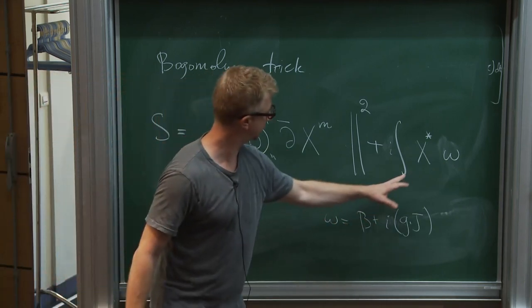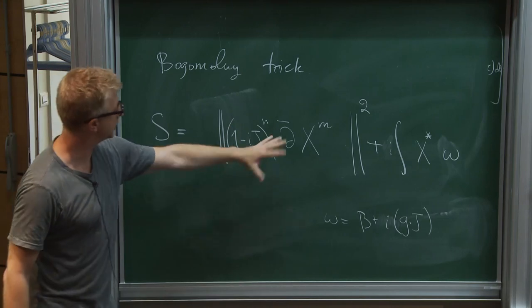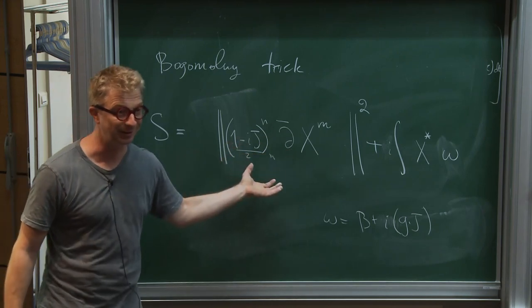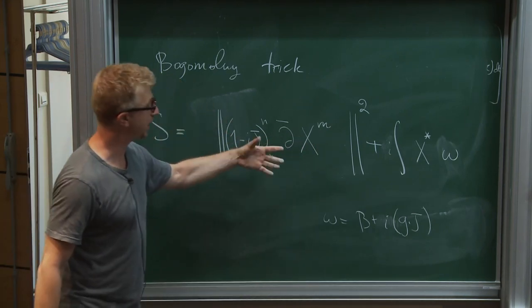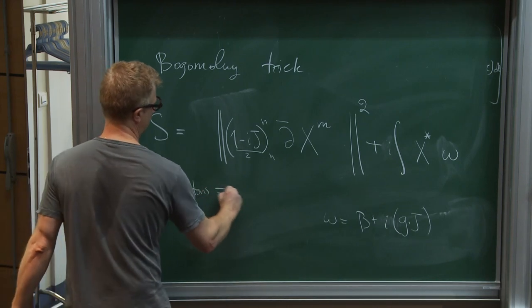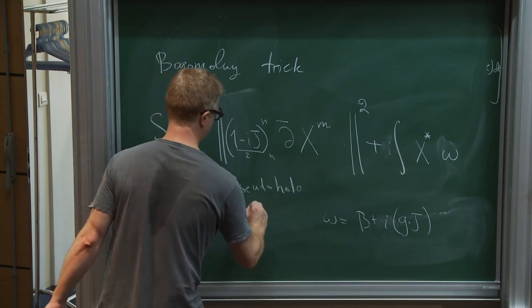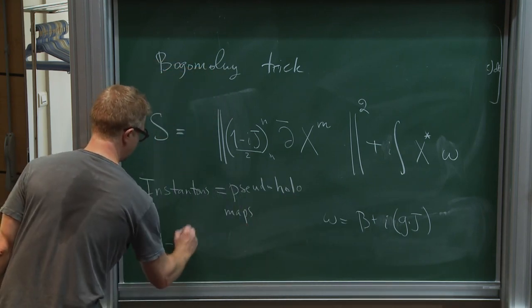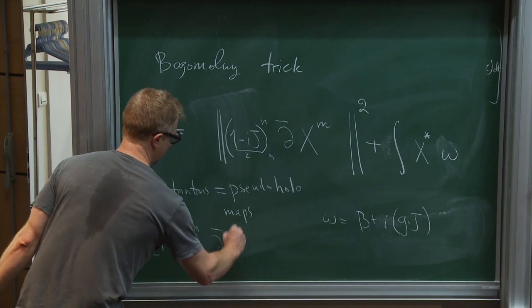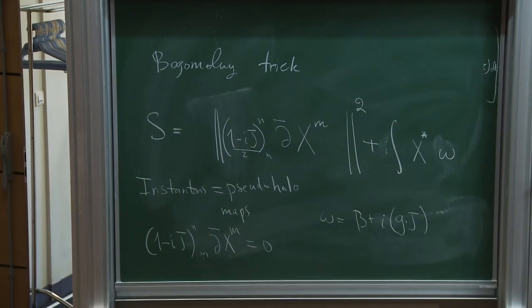Omega is built out of B and G dot J. If this form is closed, this part of the action knows only about the topology — the degree of the map — and you minimize the action by setting the anti-holomorphic component to zero. That's how you arrive at the notion of instantons in the sigma model, which are pseudo-holomorphic maps. This is only when this number has certain positivity properties — there's another way of rewriting with the plus sign giving anti-instantons — but one way or another you get solutions of the first-order equation. Instantons equal pseudo-holomorphic maps — they solve this equation, but it's much better than solving the sigma model equations which are second-order.